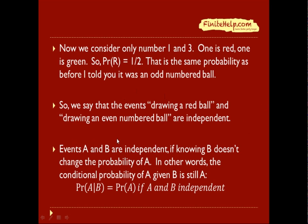So events A and B are independent if knowing B doesn't change the probability of A. In other words, the conditional probability of A given B is still A.